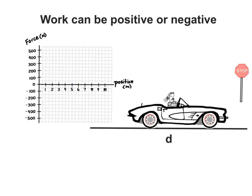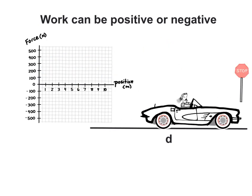And in our slowing down example, force would be in the negative direction. So we would have a negative area. And that means negative work was done on the car.